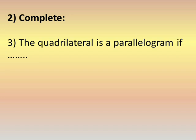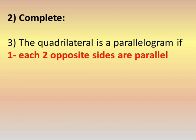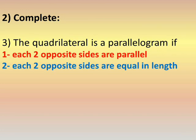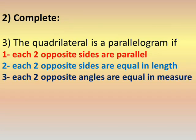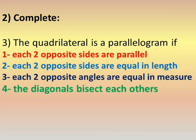The four conditions for a parallelogram are: condition one — the two opposite sides are parallel; condition two — the two opposite sides are equal in length; condition three — each two opposite angles are equal in measure; condition four — the diagonals bisect each other.